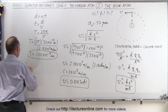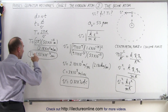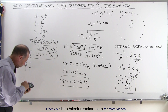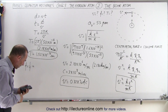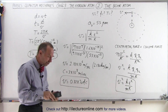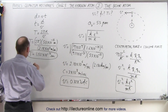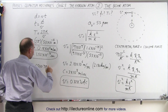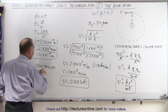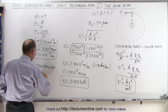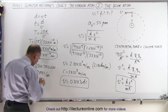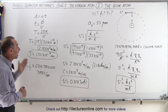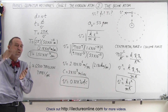Since the frequency is equal to 1 over the period, that will then be equal to the inverse of that number, and that will tell us how many times per second the electron goes around the nucleus. Taking the inverse, it is about 6,500 trillion times per second. Not trillion, not a thousand trillion, but 6,500 trillion times per second — that's how many times the electron goes around the nucleus.